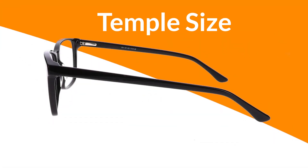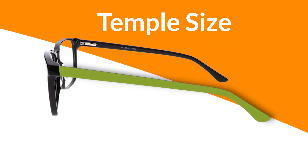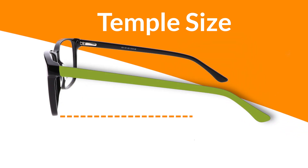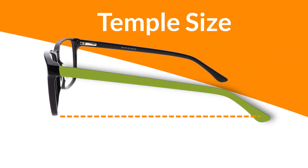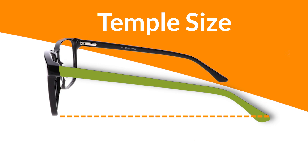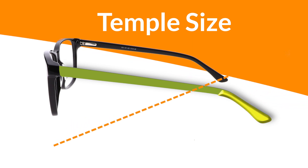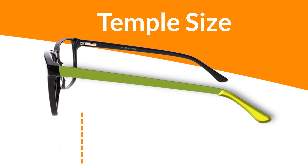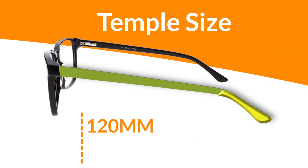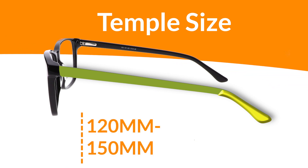Next is the temple size. This is the length of the temple bar from screw to its temple tip, which includes the band that sits behind your ear. This measurement can range from 120mm to 150mm long.